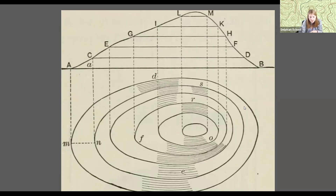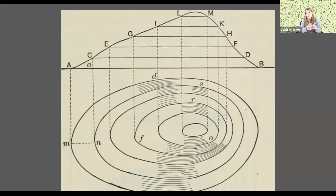Topographic maps are more specific in some ways because they show different information than other maps. There are lots of kinds of maps — some show what products an area produces, with little pictures of wheat or machinery. A topographic map is just one kind, and specifically, contour maps are used as part of topographic maps to show elevation, or how high up above the sea you are.